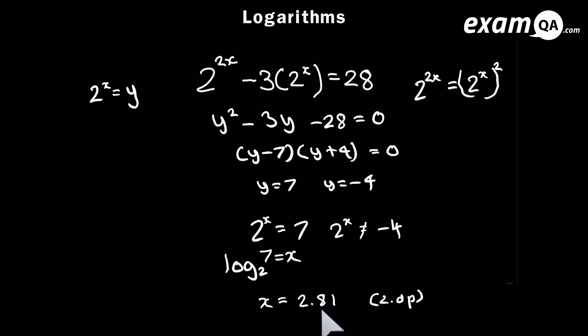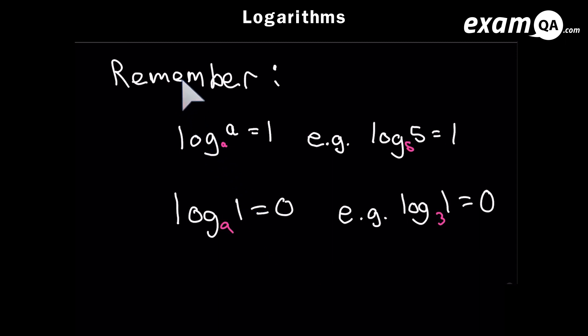Now here's a couple of extra things I thought I'd show you that you should really remember. So log base a, a, is always 1. It doesn't matter what a is. And I've shown you here an example, log base 5, 5, is indeed 1. Okay, the next thing. Here we've got log base a, 1. And that's always going to be 0. And if you look here, you've got log base 3, 1. And you put that in your calculator, you will indeed get 0. It doesn't matter what that a value is.